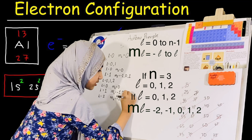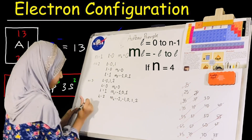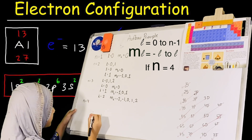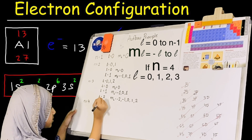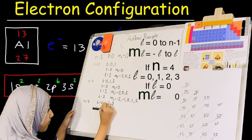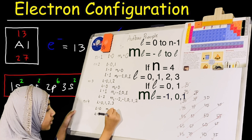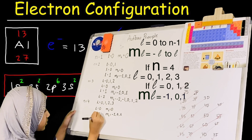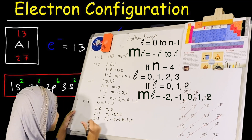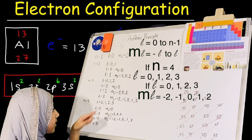For n equals 4, l equals 0, 1, 2, and 3. When l equals 0, ml equals 0. When l equals 1, ml equals negative 1, 0, positive 1. When l equals 2, ml equals negative 2, negative 1, 0, positive 1, positive 2. When l equals 3, ml equals negative 3, negative 2, negative 1, 0, positive 1, positive 2, positive 3.